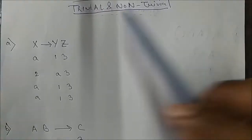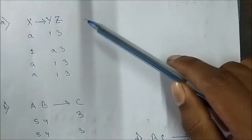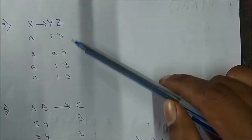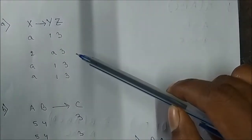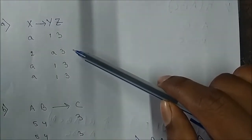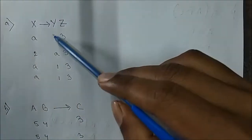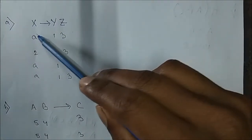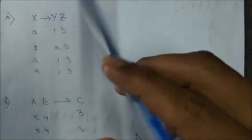Hello everyone. Today we will talk about trivial and non-trivial functional dependencies. We are given some dependencies and we have to determine which dependency is trivial and which is non-trivial. I've explained this in an earlier video, so please watch that previous video first for better understanding. So here is given this functional dependency: X → YZ.